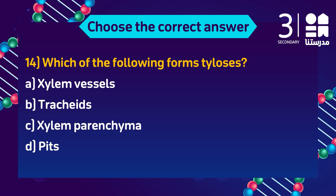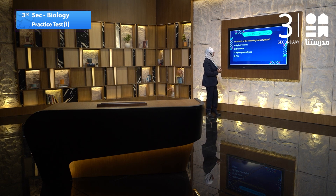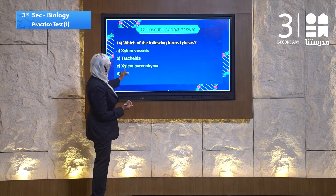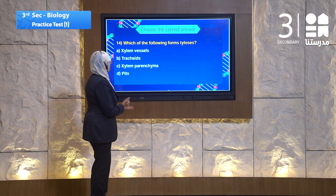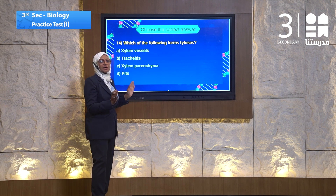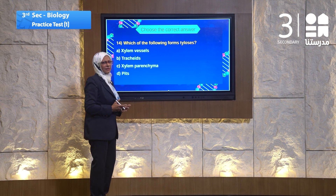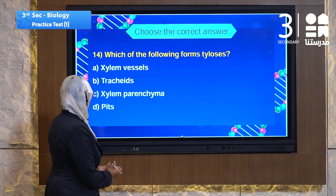Question 14 is about tyloses. Tyloses is a cell function related to cell division to make xylem vessels, tracheids, xylem parenchyma, or pits. Xylem vessels are dead tissue and cannot make tyloses. Tracheids are also dead tissue. Xylem parenchyma is living tissue and can divide to make tyloses.